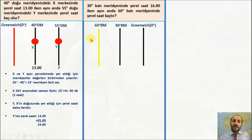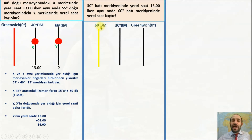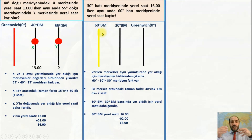Bir soru daha. Bu sefer batı yarım kürede, aynı yarım kürede iki nokta: 30 derece ve 60 derece batı. 30 derece meridyeninde saat 16:00. Batı yarım kürede en sağdaki ileridedir; 30°W, 60°W'den daha sağda (doğuda), dolayısıyla 60°'deki saat 16:00'dan geride olmalı. İkisi de batıda: 60-30 = 30 derece fark. 30 × 4 = 120 dakika = 2 saat. 60°W'de yerel saat geride olduğu için 16:00 - 2:00 = 14:00.